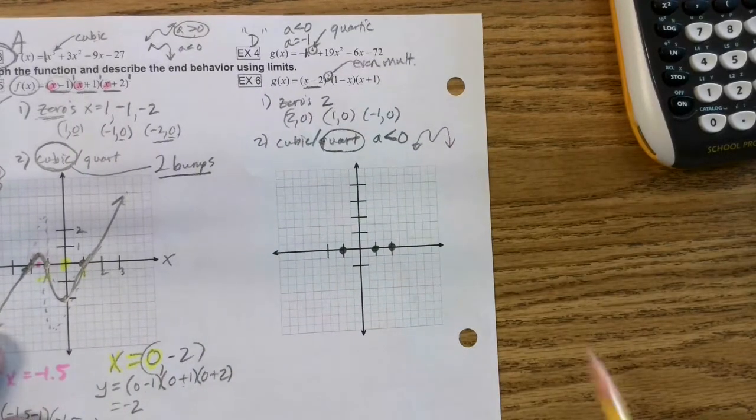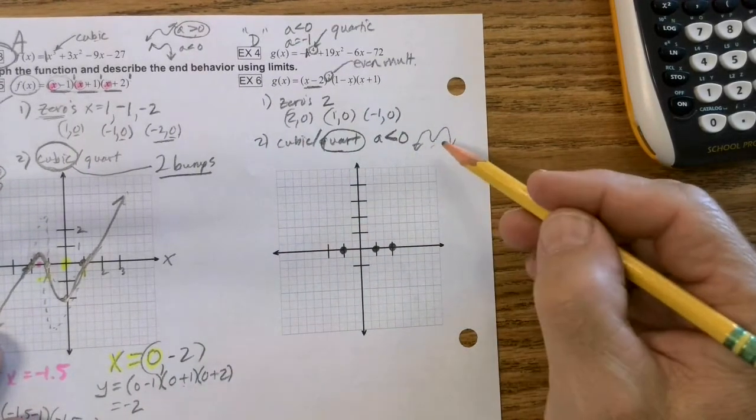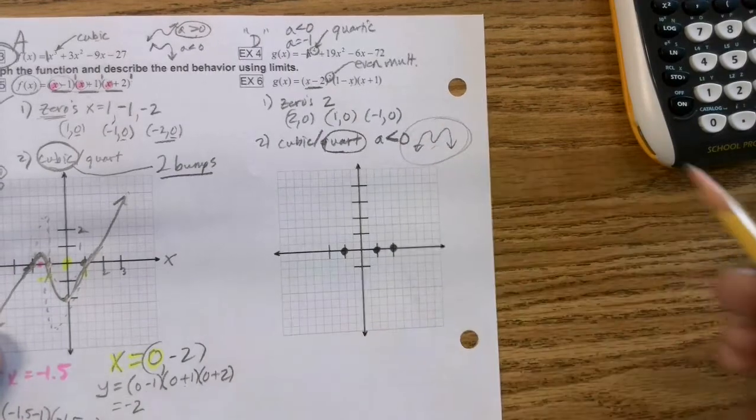But A is less than zero, which tells me it's going to be an M around. Again, I'm sorry. But it is a memory tool. That's all I'm doing it. That's the only reason I'm doing that.